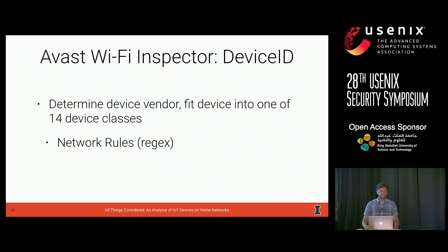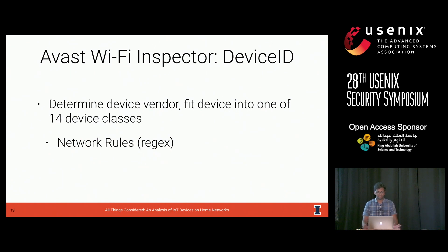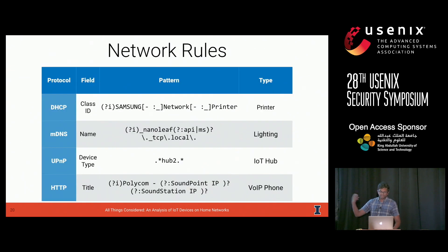Device identification works primarily through two mechanisms. The first is what we call network rules — essentially regular expressions manually curated by inspecting the network behavior of a large set of known devices. In total, there are about 1,000 rules in the software over various fields. In practice, this labels around 60% of devices in a random validation set, but obviously requires tons of manual analysis — in Avast's case, over three years of effort examining packets and extracting regular expressions.